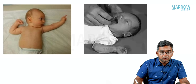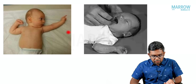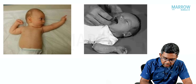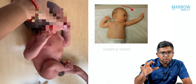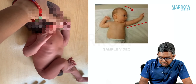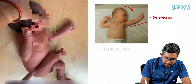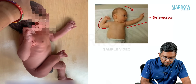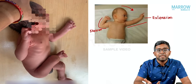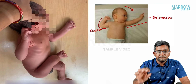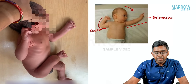Look at this picture — the first picture; the second picture shows the rooting reflex which we already discussed. In the asymmetric tonic neck reflex, when you turn the neck of the baby to one side — say the baby's left side — on the same side the limb extends, while on the opposite side the limb undergoes flexion. One limb shows extension, the other shows flexion — that is why it is called the asymmetric tonic neck reflex.